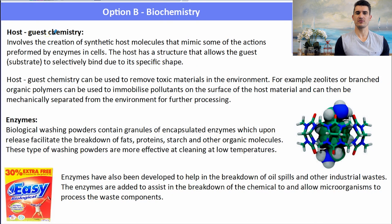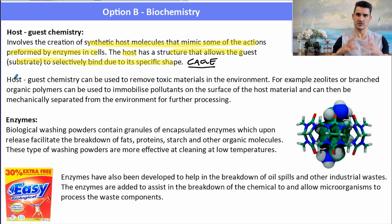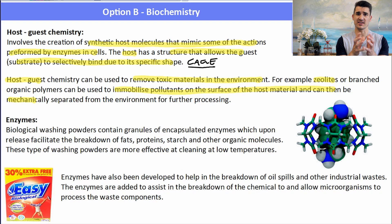Host-guest chemistry involves the creation of a synthetic host that mimics some of the actions performed by enzymes in the cell. The host has a structure that allows the guest — the substrate — to selectively bind to its specific shape, working like a cage where the guest gets trapped inside. We can use host-guest chemistry to remove toxic materials from the environment. Zeolites, which are specially designed cage structures, or branched organic polymers, are used to immobilize pollutants on the surface of the host so they can then be separated and removed from the system.